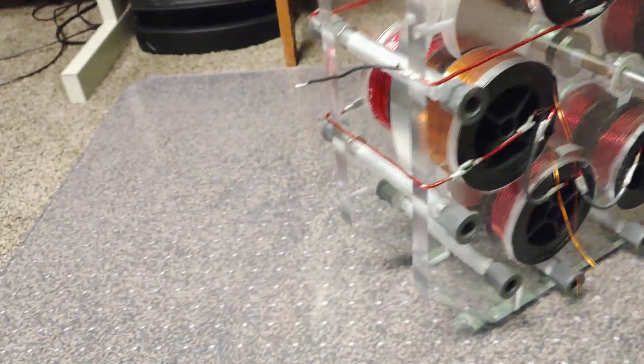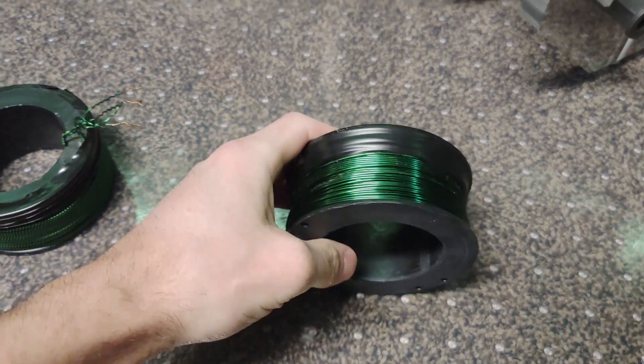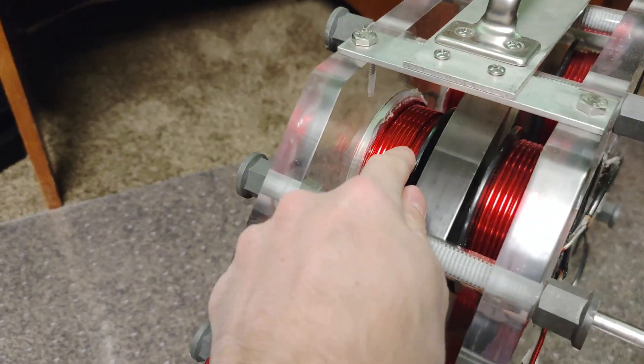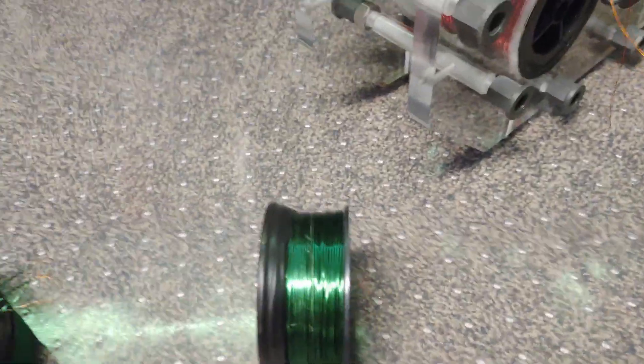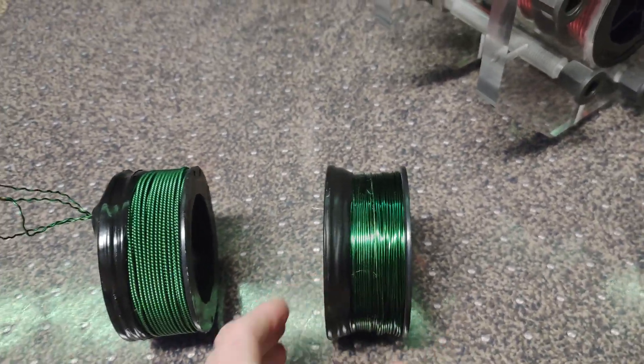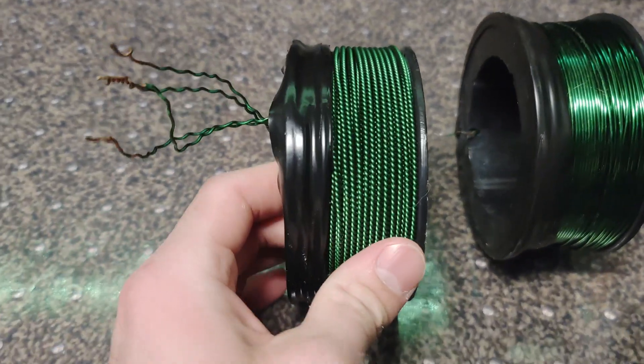Also in the past I had an idea with these. This is 18 gauge, this is 10 gauge wire, so yeah it's a pretty big difference. But this is the coil size that I used originally when I designed the motor.